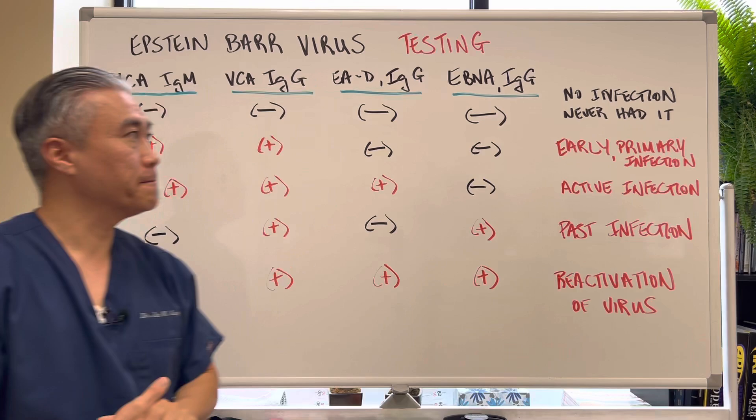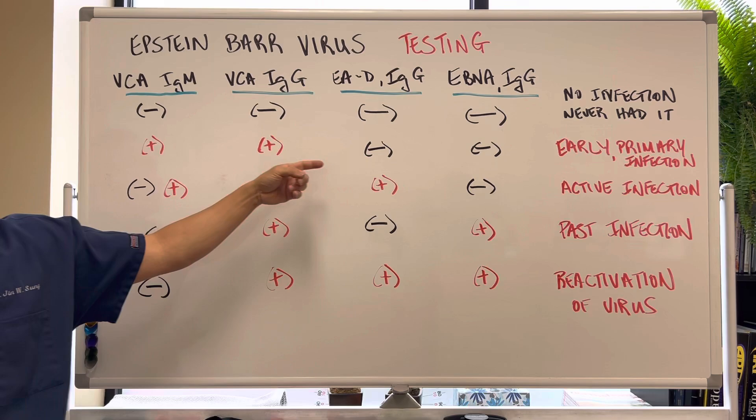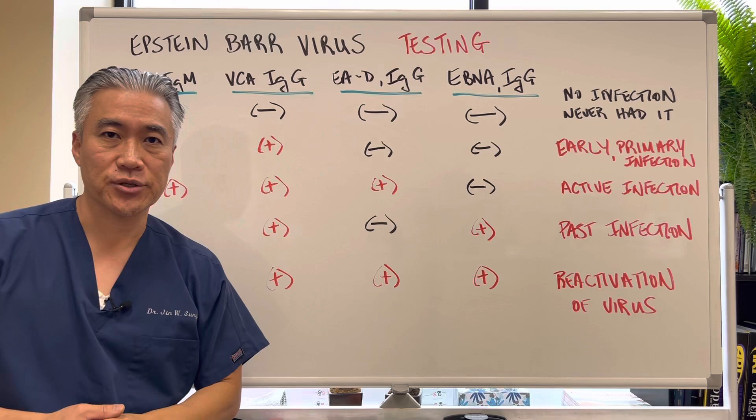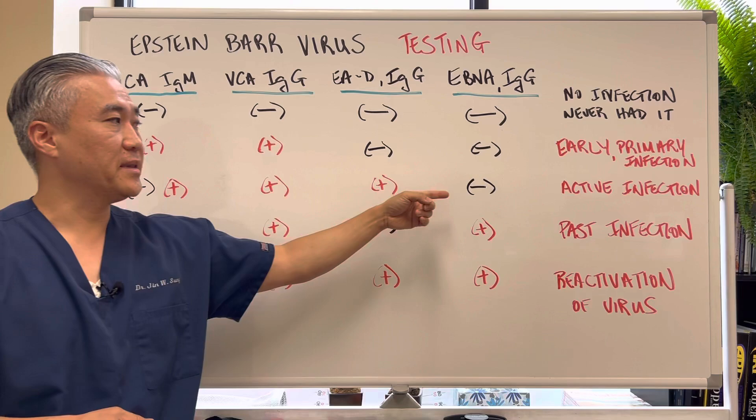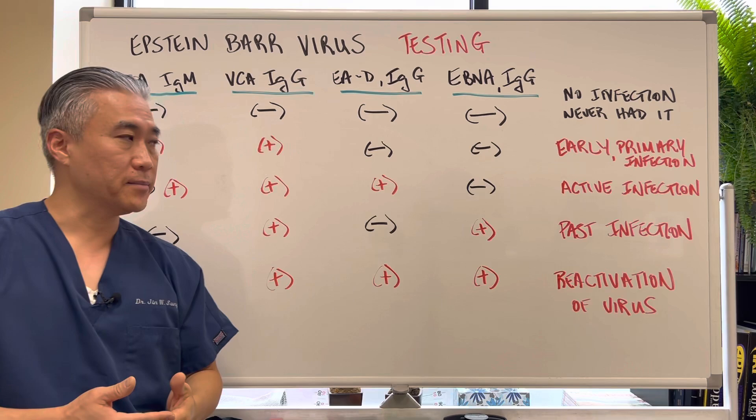When you have a positive IgM, positive IgG, and negatives for early antigen and EBNA, you're going to have an early or primary infection, because IgM goes up initially. When you have a positive or negative IgM, positive IgG, positive early antigen, and negative EBNA, that means it's an active infection still going on.